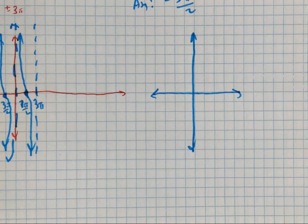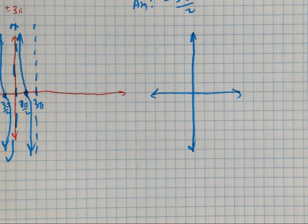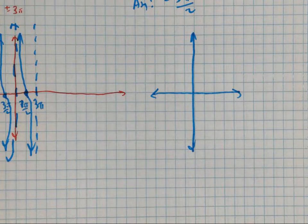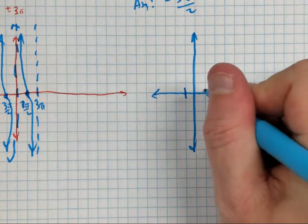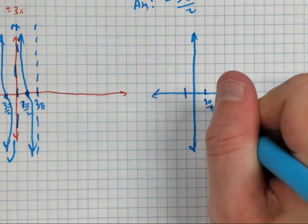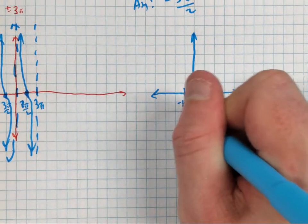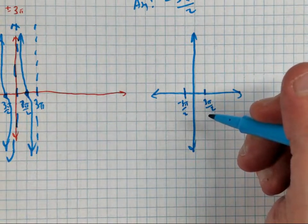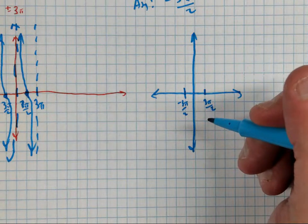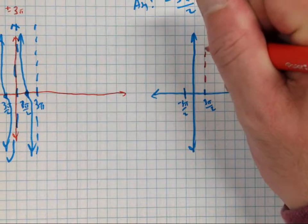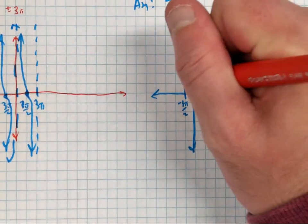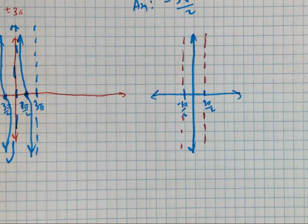Now I'm going to graph the asymptotes first — three pi over two, negative three pi over two. What do you know about the origin on a tangent? Is there a point at the origin? Yes. And what's always going to be at the origin for cotangent? An asymptote — very good.